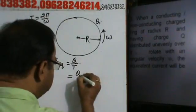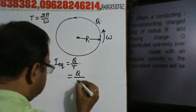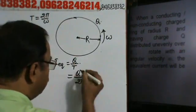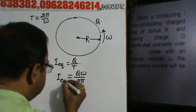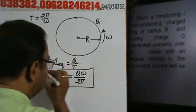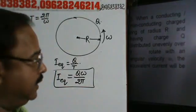So this will be equal to Q by T, aor T ke jaga rakh diye, 2π by omega, omega oopan chala jayega. So this I equivalent will be equal to Qω by 2π. Right?